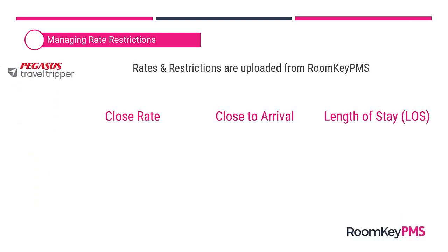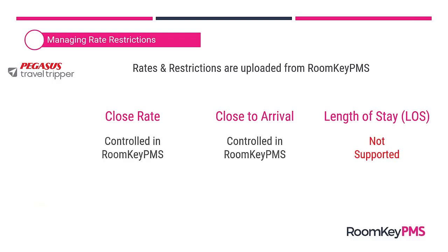For TravelTripper, all rates and restrictions are uploaded from Roomkey. When it comes to the three types of restrictions, close rate and close-to-arrival are supported, but TravelTripper does not support length-of-stay restrictions. Only the close rate and close-to-arrival restrictions applied in Roomkey are uploaded to TravelTripper.